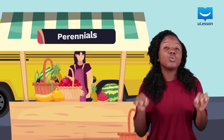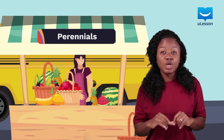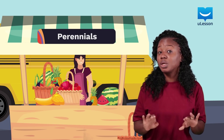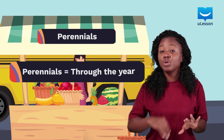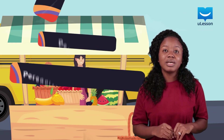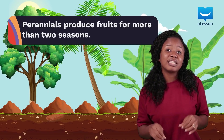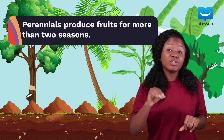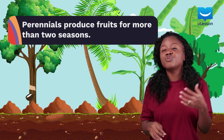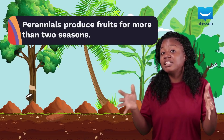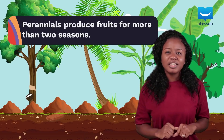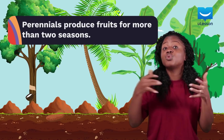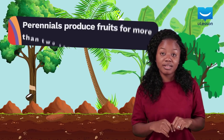The word perennial comes from two Latin words that translate to through the year. These plants live more than two years, and once they mature, they could produce fruits for many years. They could live three years or as long as 15 to 20 years.